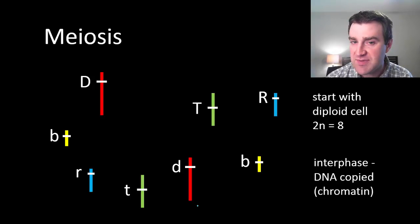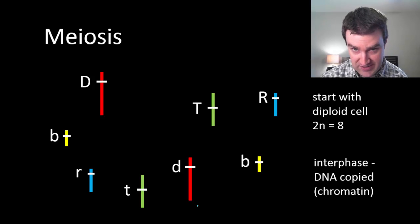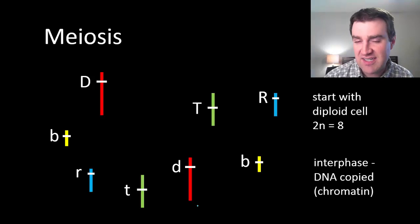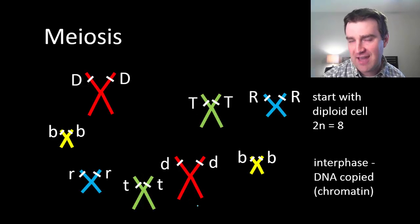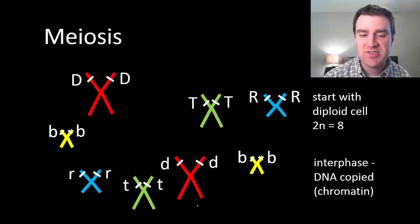We're going to see that we start out meiosis much the same in a process called interphase where we actually copy all of the DNA. Technically the DNA is still unpacked chromatin in this phase, but that's kind of hard to show. So we duplicate everything and then after that we pack them up into these chromosomes.